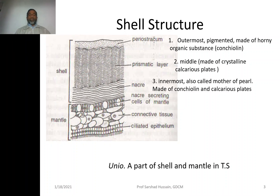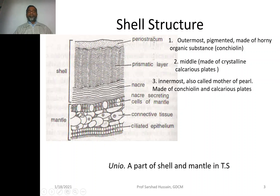As far as the transverse section of the shell is concerned, it is made up of three layers: periostracum, prismatic layer, and nacre. Below is the mantle layer which secretes the shell. The periostracum is the first, outermost layer. It is a colored, pigmented layer, made up of a horny organic substance called conchiolin.